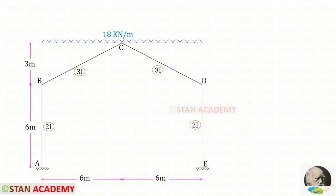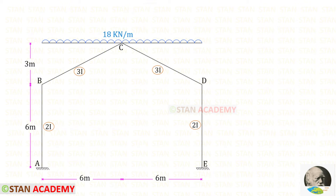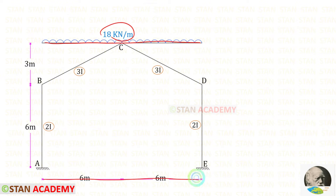This is a symmetrical frame with different moments of inertia. For the vertical members AB and DE, the moment of inertia is 2i. For the inclined members BC and CD, it is 3i. Above the frame, we have a uniformly distributed load of 18 kN per meter, acting for the full span of the frame.